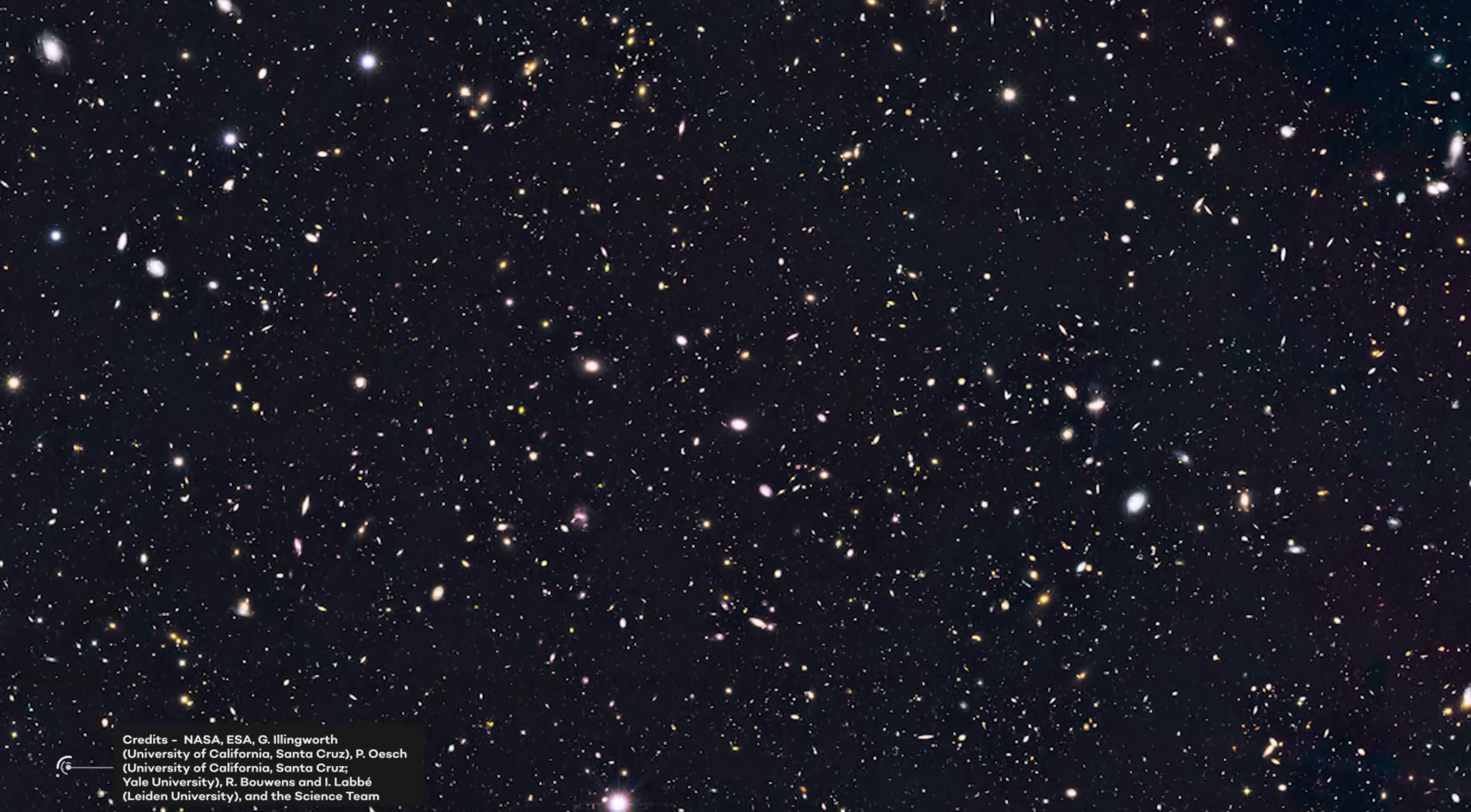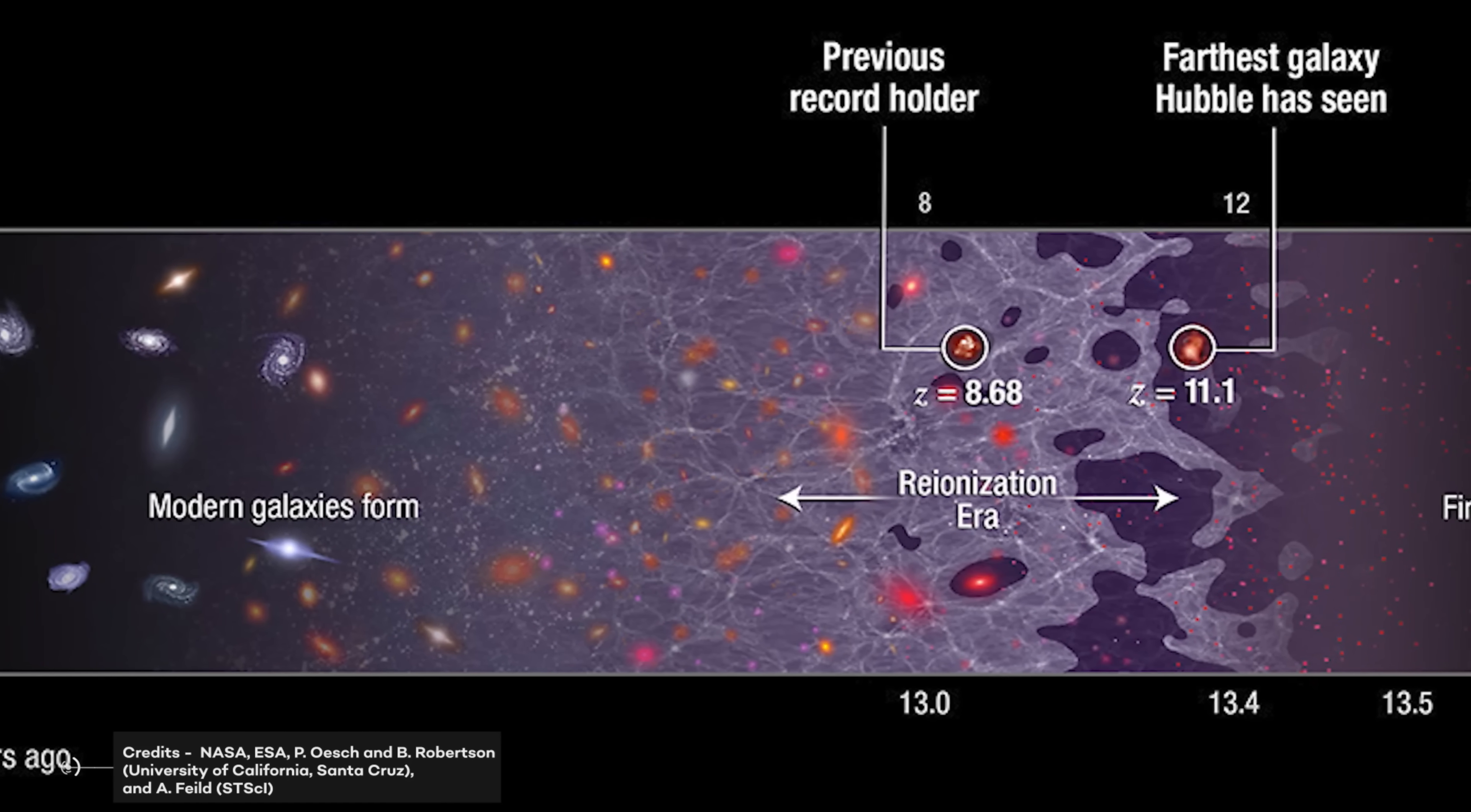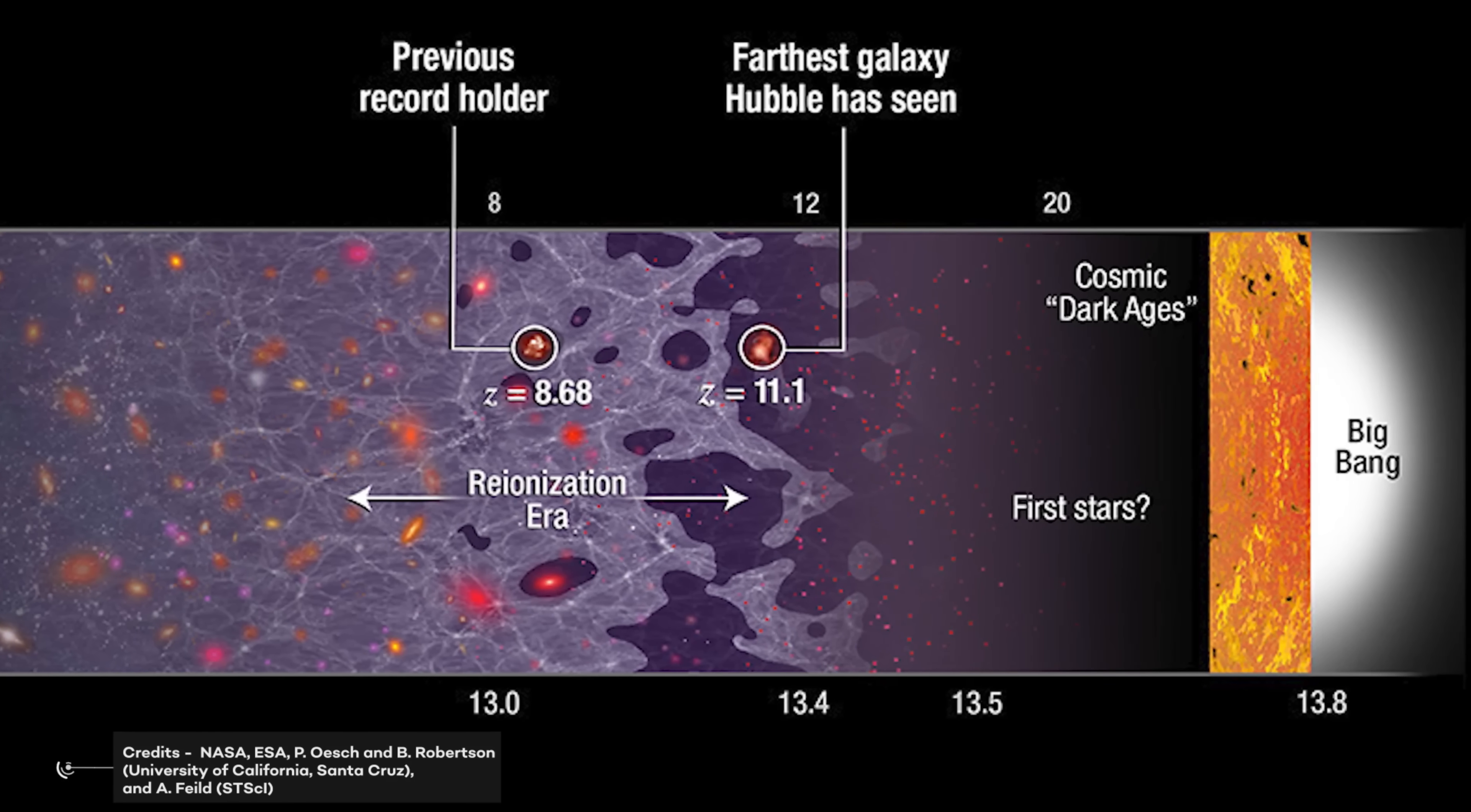The higher the value of Z, the greater the distance involved. The most distant galaxies visible with the Hubble Space Telescope generally show a Z of less than 10, while the most distant proto-galaxies, the first ones formed after the Big Bang and never observed before the advent of the Webb Telescope, are expected to show a Z of more than 15.